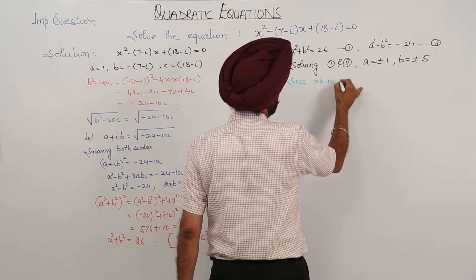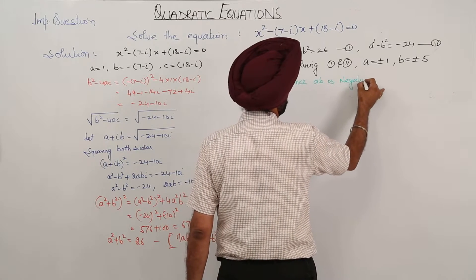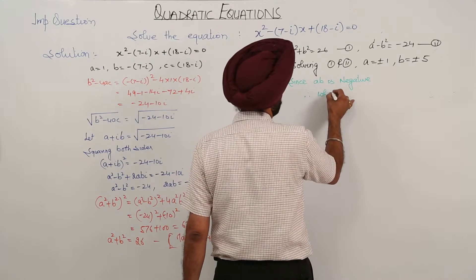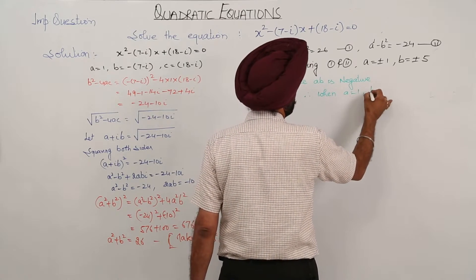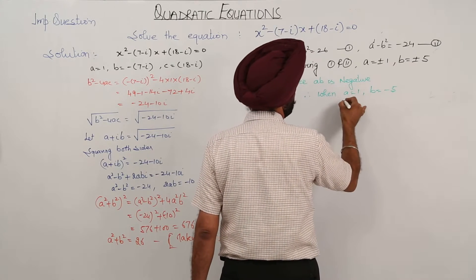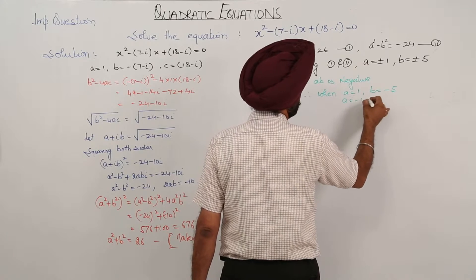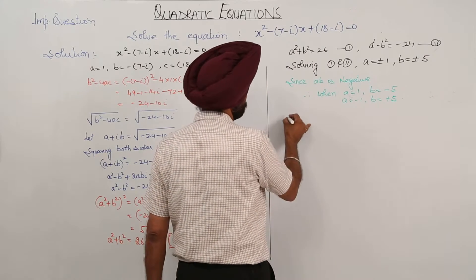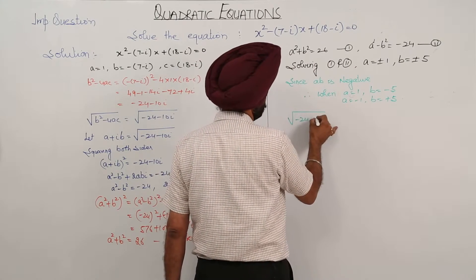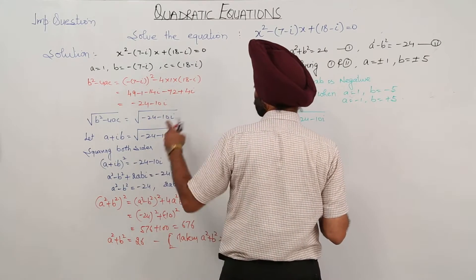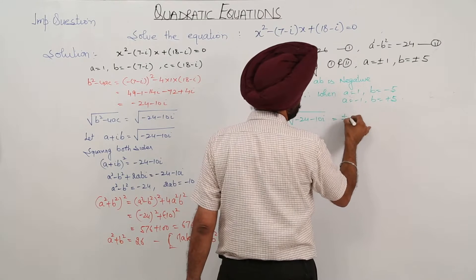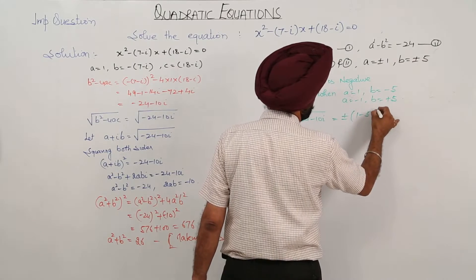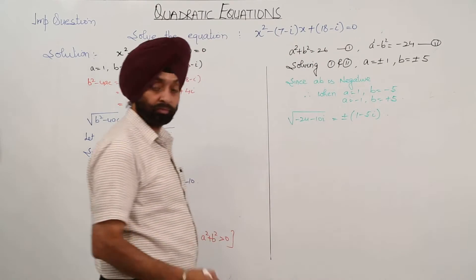Since ab is negative, when a = 1, b = -5, and when a = -1, b = +5. Therefore √(-24 - 10i) = ±(1 - 5i).